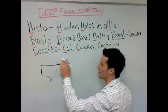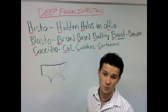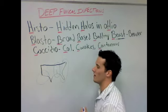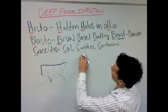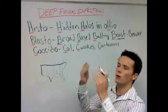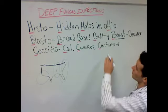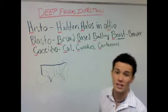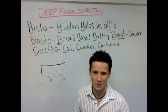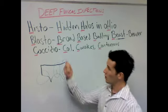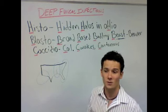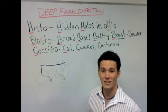Now let's go with Coccidio. Coccidio is in California — Californication. It's found in California and the Southwest. What do you have in California? You have quakes. The quakes erupt, throw up the soil, and people start getting infected. It also causes desert bumps — that's the Californication. The CA in California can also stand for calcification, which happens with the lesions it causes.